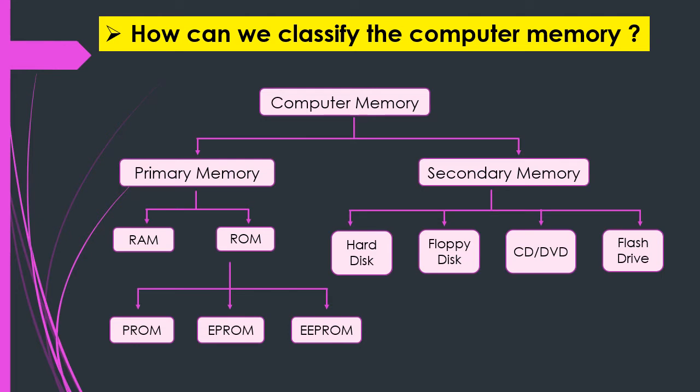Now we'll see how we can classify the computer memory. Computer memory is divided into two main sections: primary memory and secondary memory. Primary memory can again be classified into two sections — RAM and ROM. ROM is further divided into three: PROM, EPROM, and EEPROM.